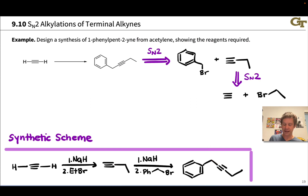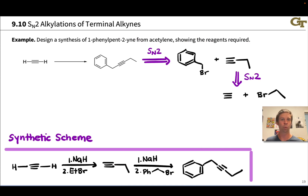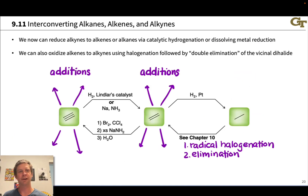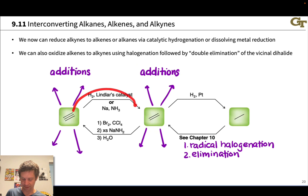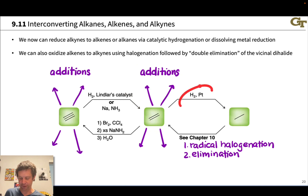This is highly useful — you can imagine taking this product and doing all kinds of things with it. We could do dissolving metal reduction to get the trans-alkene, reduce all the way to an alkane, or do Lindlar hydrogenation to get the cis-alkene. The world is our oyster now that we have this carbon-carbon triple bond as a functional and synthetic handle. Alkynes can be converted into alkenes or alkanes using H2 with Lindlar's catalyst, dissolving metal reduction, or standard hydrogenation — and each class of functional group has its own set of reactions.